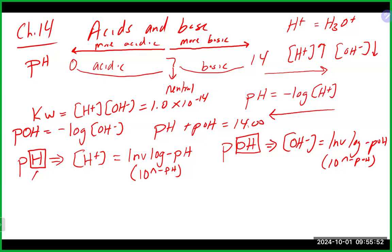Significant figure-wise, when doing something with pH, the pH or POH value should have the same number of decimal places as the number of significant figures in the concentration. Going in the reverse direction, the number of decimal places in the pH or POH tells you how many significant figures your concentration should have.